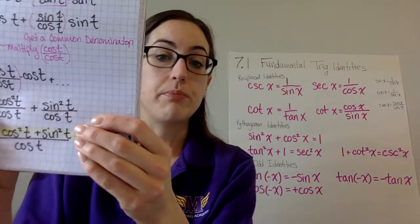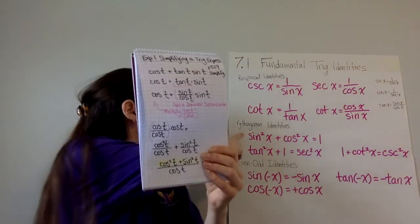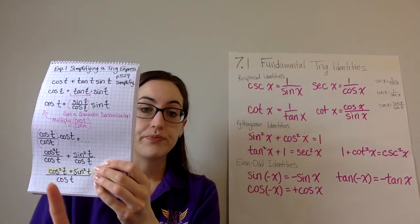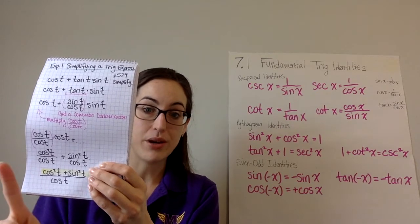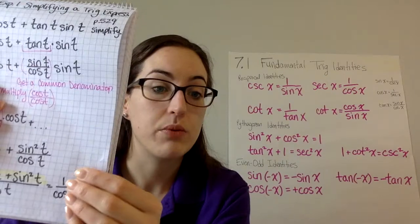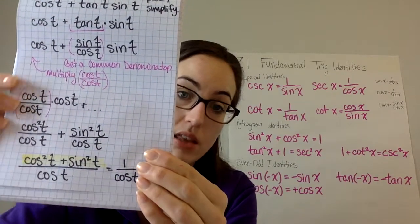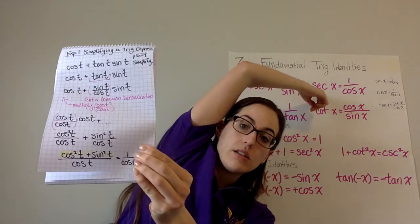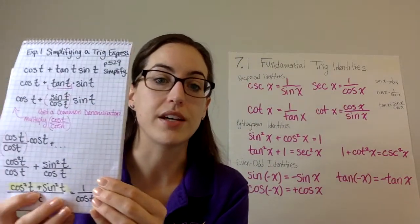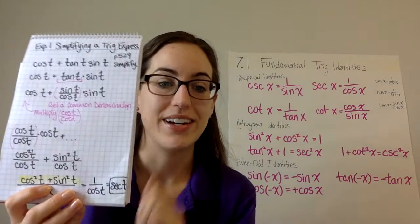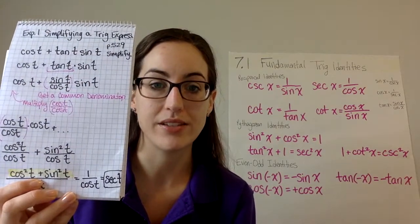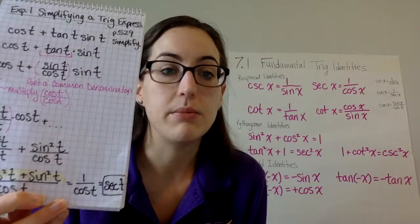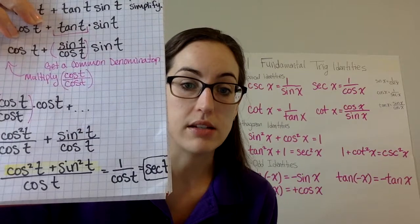I've highlighted these here. This is a huge Pythagorean theorem identity right here. Sine squared x plus cosine squared x equals 1. We just get to replace that whole numerator with the number 1. That's what it's equal to. We still have cosine t in the bottom. Now, 1 over cosine t, we see right up there, secant. 1 over cosine can be replaced with secant, and that's your final answer. We've gotten rid of as many trig things as we can, we've eliminated the denominator. We're done. You would leave it as secant t.